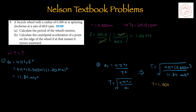For question number nine: a bicycle wheel with a radius of 0.3 meters is spinning clockwise at 60 revolutions per minute. Part A asks us to calculate the period of the wheel's motion. Converting 60 rev/min to hertz using the factor-label method gives a frequency of 1 Hz. To solve for period, we use two formula variations: first ac = 4π²rf² to find the magnitude of centripetal acceleration, then plugging that into ac = 4π²r / T² and isolating for T gives a period of 1 second.